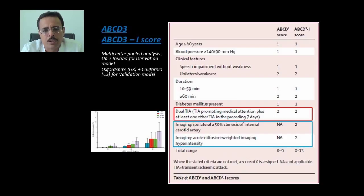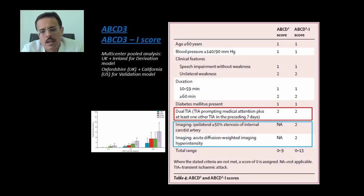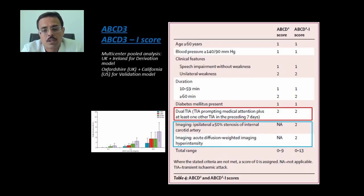The ABCD3 and ABCD3-I scores predict the risk of stroke after TIA. In that scoring, patients with dual TIAs — meaning multiple TIAs after an event — patients with more than 50% ipsilateral carotid stenosis, and patients whose DWI imaging shows positivity are known to have a higher incidence of stroke within the first few weeks.